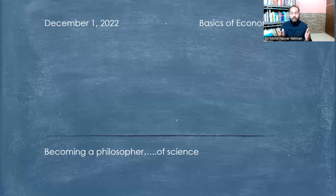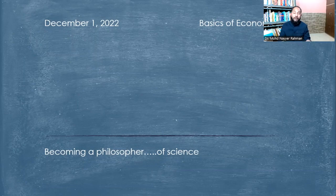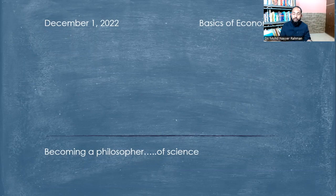Hey participants, welcome to the second session. In the first session, we discussed the philosophical argument for applying econometrics, wherein we identified two key fallacies: the populace fallacy and the post hoc fallacy. We also identified that cause and effect relationship is what econometrics is searching for.